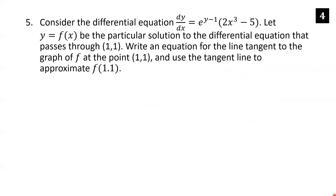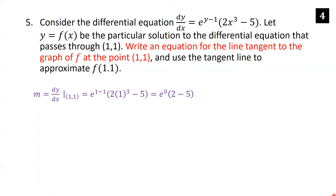Consider the differential equation dy/dx equals e to the (y minus 1) times (2x cubed minus 5). Let y equals f(x) be the particular solution passing through (1, 1). To write the tangent line equation at (1, 1), we plug x equals 1 and y equals 1 into the derivative. e to the (1 minus 1) is e to the 0, which is 1, times (2 times 1 cubed minus 5) equals 1 times negative 3, which is negative 3. So the slope is negative 3.